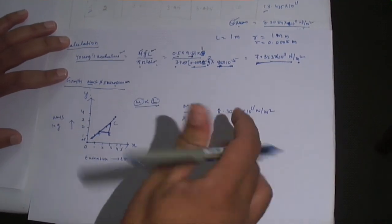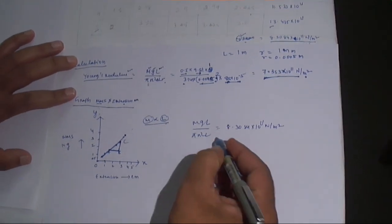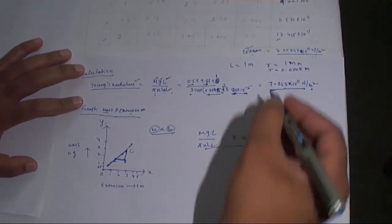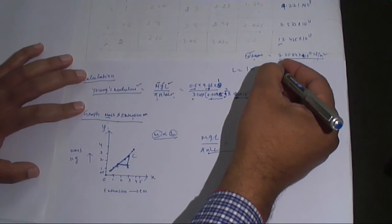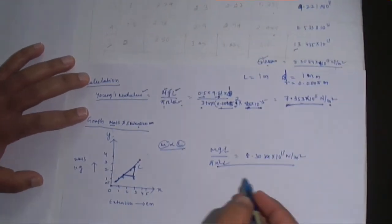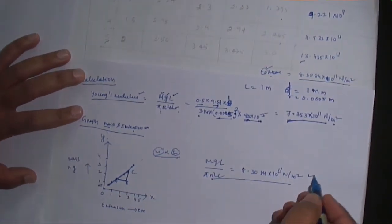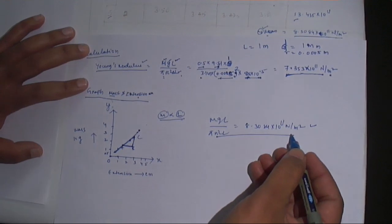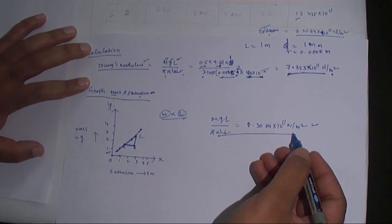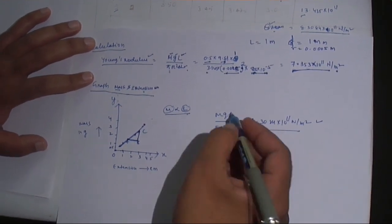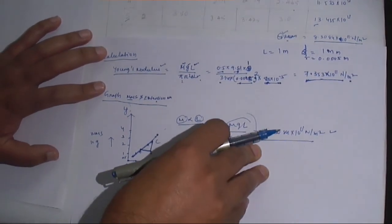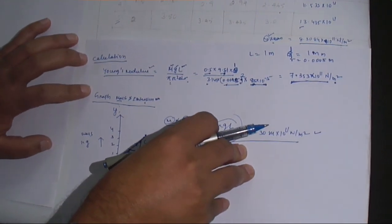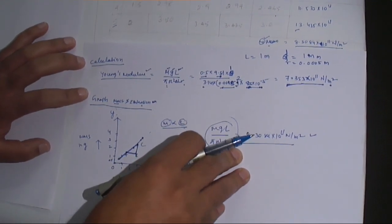From the experiment, the Young's modulus of the wire of 1 mm diameter is 8.3084 × 10¹¹ N/m². This is the Young's modulus obtained from the apparatus. This is the whole experiment — in the next video, we will find another experiment.